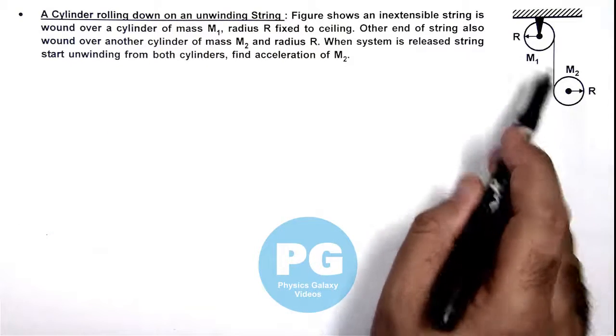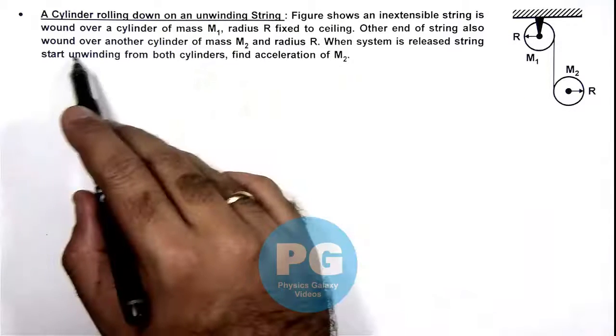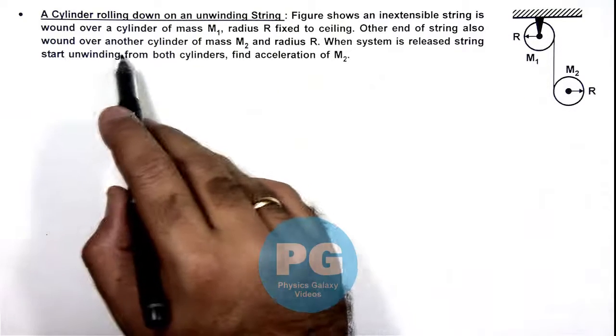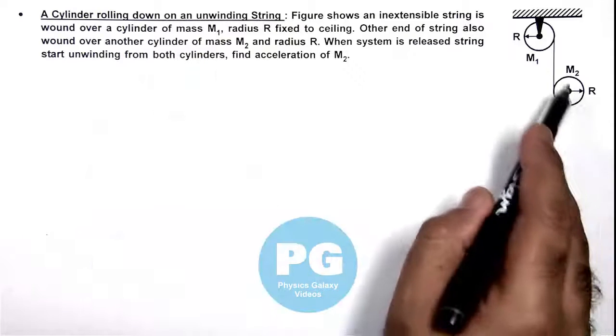The radius R is fixed to the ceiling and the other end of the string is also wound over another cylinder of mass m2 and radius R.